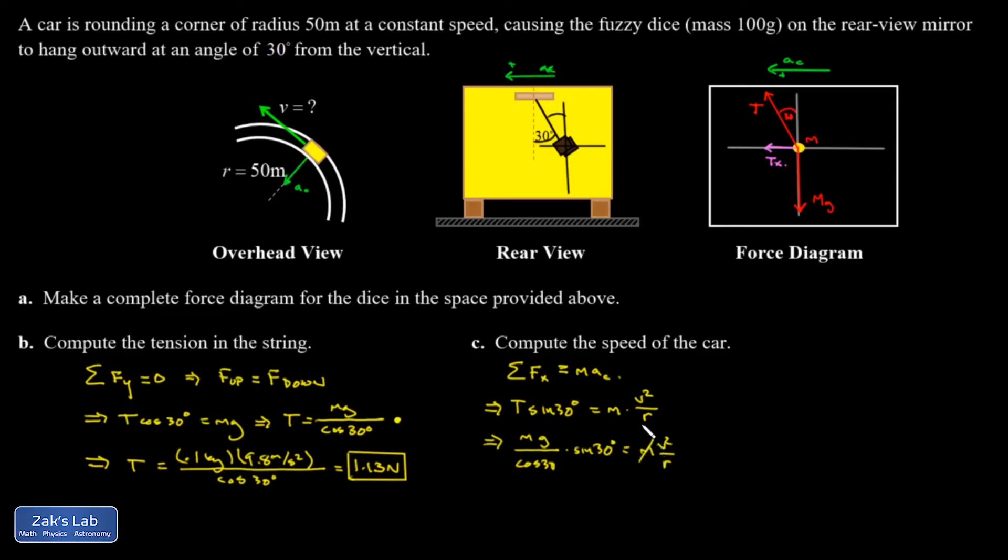And a nice thing happens here. The mass cancels out. So no matter what the mass of the fuzzy dice is, they're going to hang at the same angle. Okay, let's turn sine 30 over cosine 30 into tangent 30. And at the same time, I'm going to multiply both sides by r. So I have v squared equals gr tangent 30.